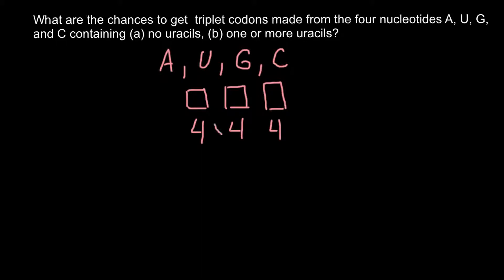We have the same four variants for the second and third positions as well. So the total number of combinations is 4 × 4 × 4 = 64. If you remember, the codon table has 64 cells: three triplets code for the stop codon, one for the start codon, and 60 code for the 20 amino acids.